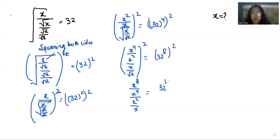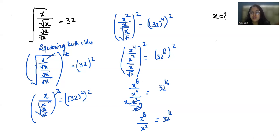Now here x to the power 2 minus x to the power 1 gives x, and x to the power 4 minus x is x to the power 3. So x to the power 8 divided by x to the power 3 is x to the power 5, equals 32 to the power 16.